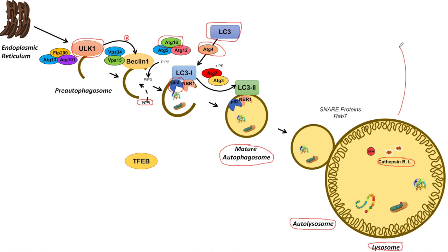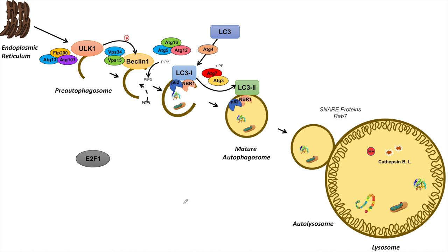So TFEB has a wide range of effects on the macroautophagy pathway. The next transcription factor we're going to talk about is E2F1, another transcriptional activator of macroautophagy. E2F1 is involved in stress-related mechanisms and is actually inhibited by NF-kappa-B, which we'll discuss in another lesson.